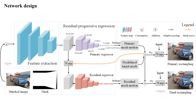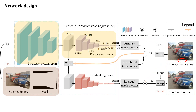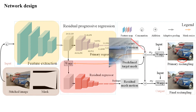Our goal is to design a simple baseline for deep rectangling. We concatenate the stitched image and its mask to form the input of the network. Then a feature extraction module and a regression module are designed to predict the initial mesh. However, this simple regression might yield uneven boundaries in the results. To solve it, we design a residual regression strategy to further predict the residual mesh deformation to smooth the boundaries.